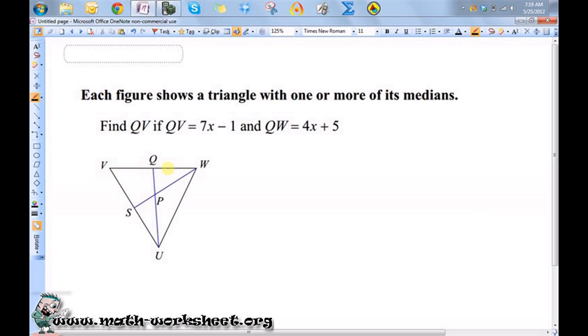If we know that this length, and we have expressions for this length and this length. Well, since this is a median, that means this is a midpoint, which means these two lengths are equal. So we know that QV is equal to QW.